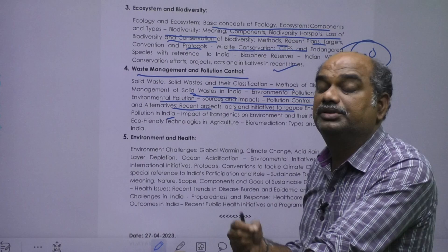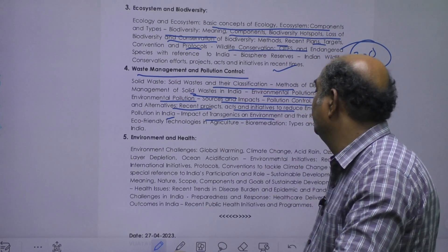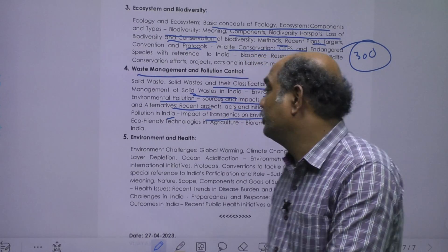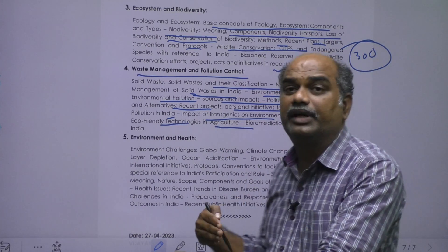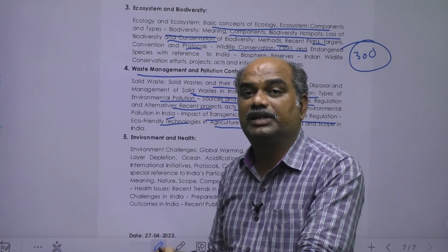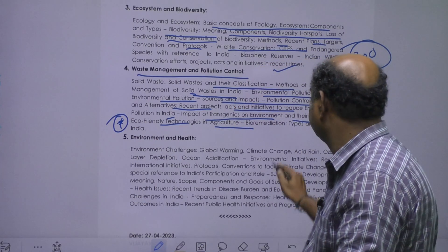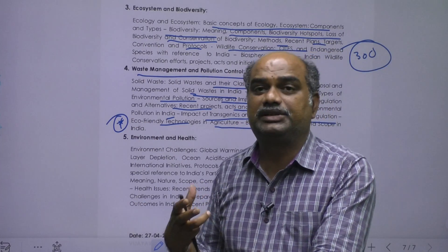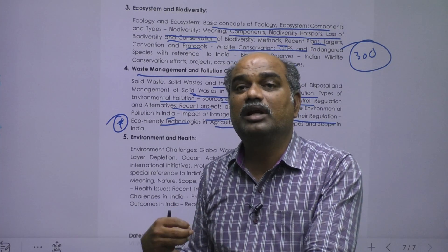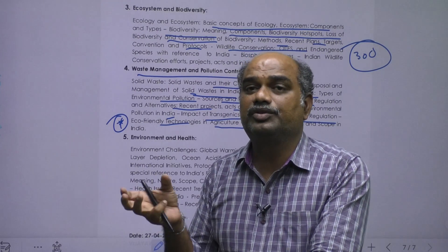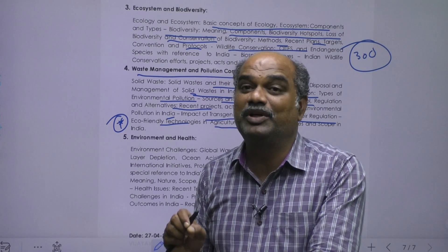Environmental pollution reduction initiatives like air quality index, impact of transgenics on the environment, eco-friendly technologies in agriculture, bio-fertilizers, bio-pesticides, organic farming, bioremediation — including phyto-remediation, phyco-remediation — and other biological methods of bioremediation are all important segments.